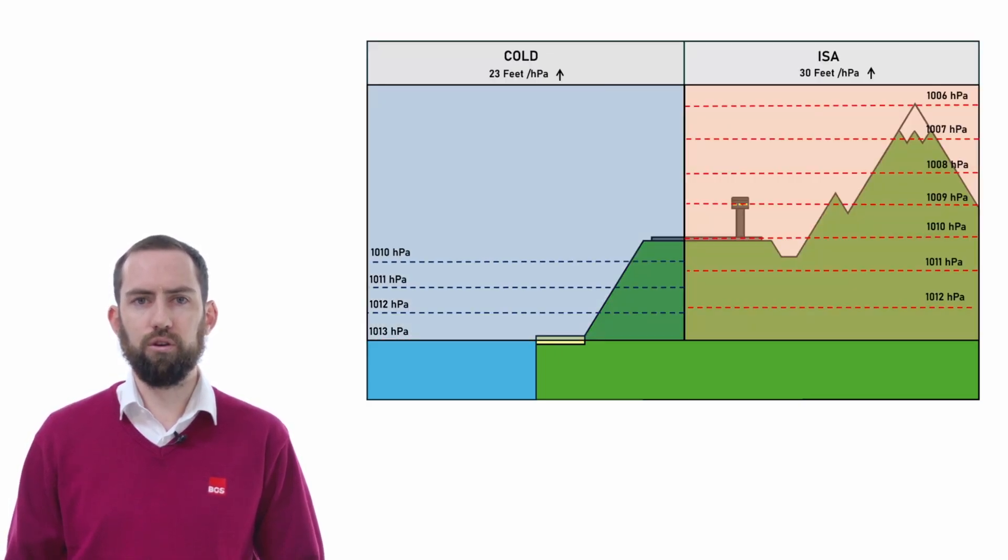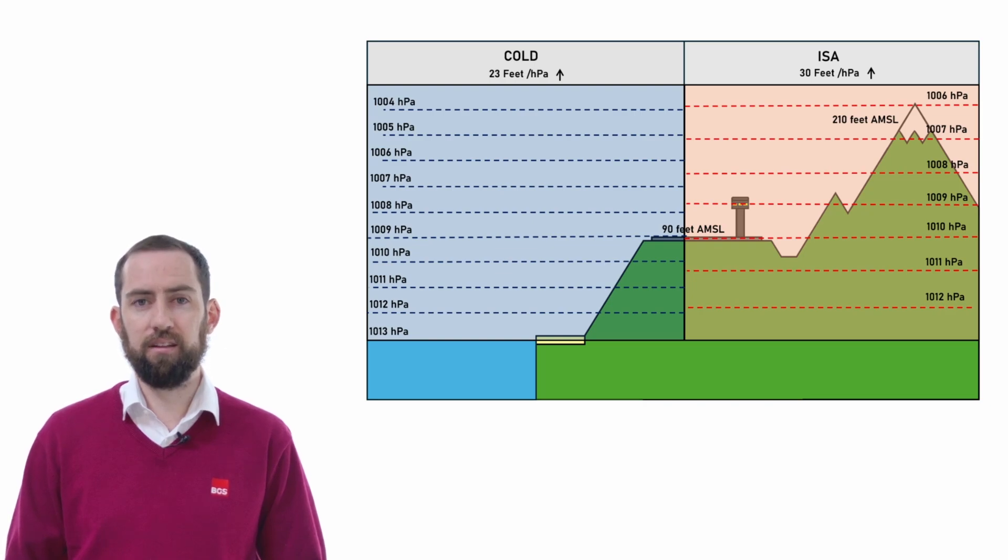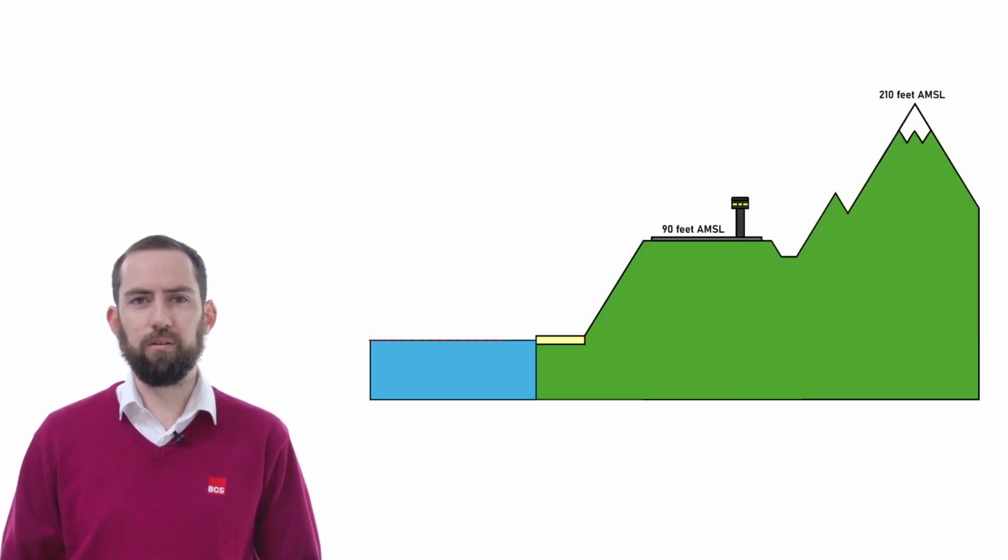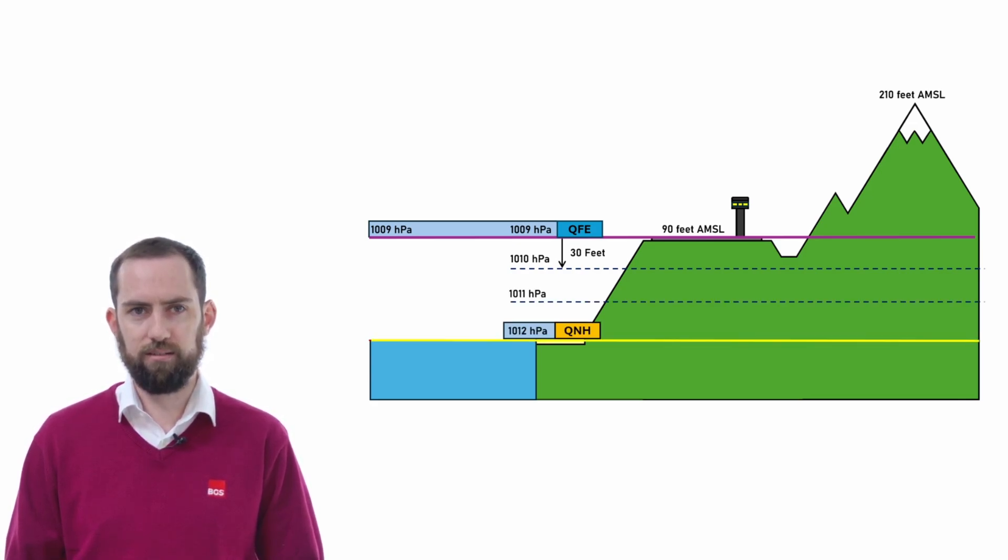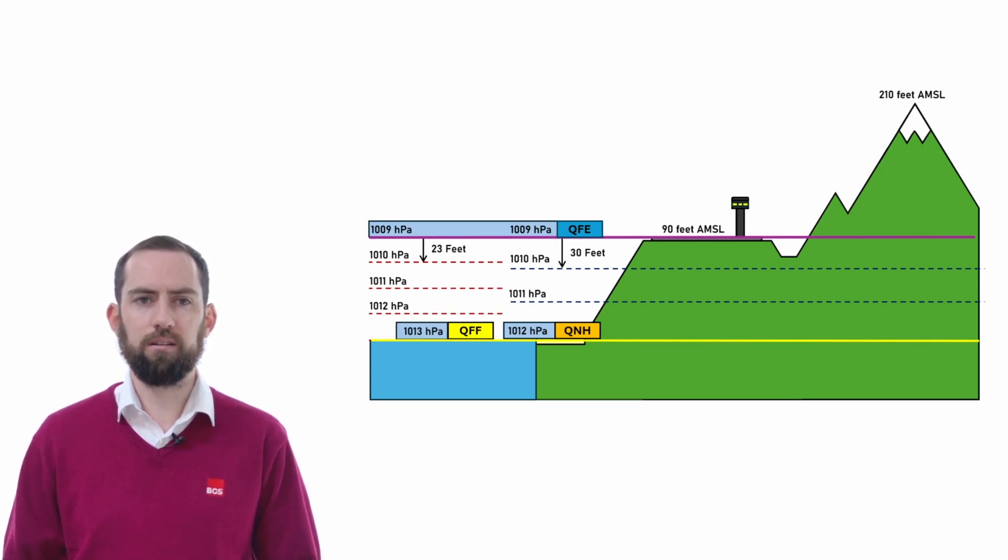Here is a side-by-side view of our two different atmospheres. You can see that at airfield level, the pressure is 1 hectopascal lower in the colder atmosphere than it is in the ISA atmosphere. What I am going to do now is introduce a new Q code called the QFF. Both the QNH and the QFF are derived from a QFE. So that is our starting point. Let's imagine that we had a QFE of 1009 hectopascals. Going down in steps of 30 feet, this would put our QNH at about 1012 hectopascals.